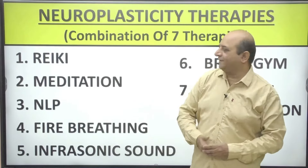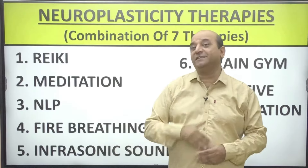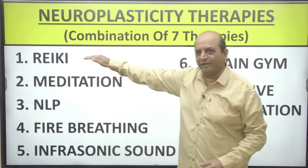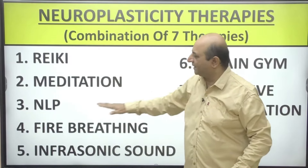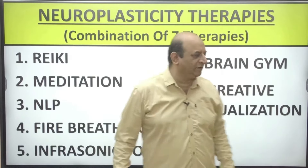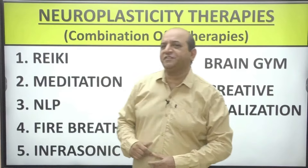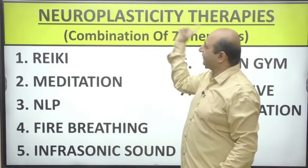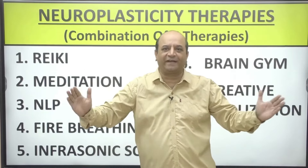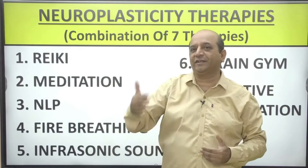You might have heard of meditation, Reiki, and NLP therapies, but the problem is that people are doing these therapies separately — Reiki separately, meditation separately, NLP separately, then fire breathing, infrasonic sound, brain gym, and creative visualization separately. Neuroplasticity says that if you combine all seven therapies, it gives a multiplied effect on your brain in terms of memory, concentration, and grasping power.